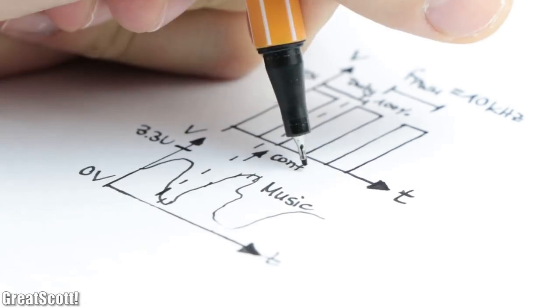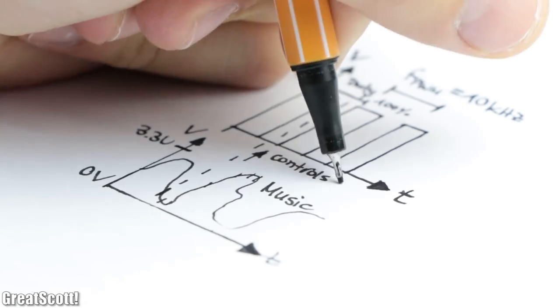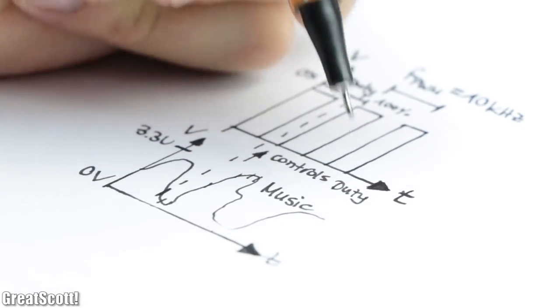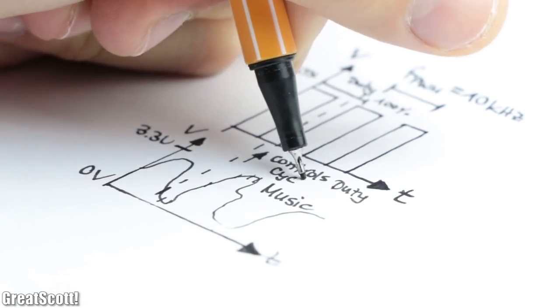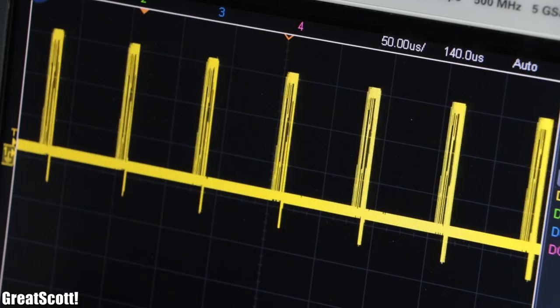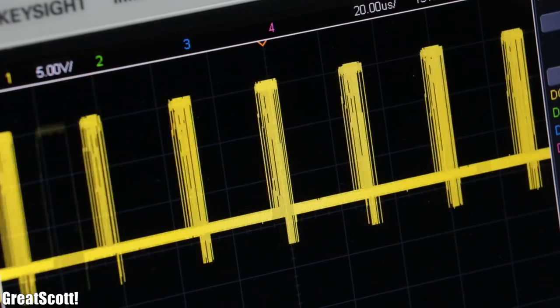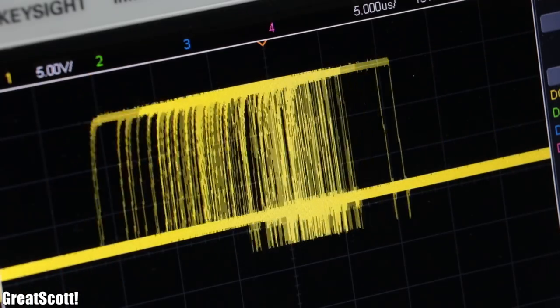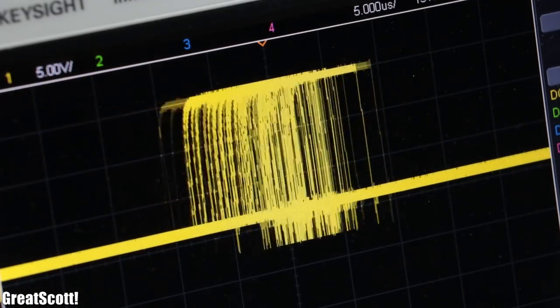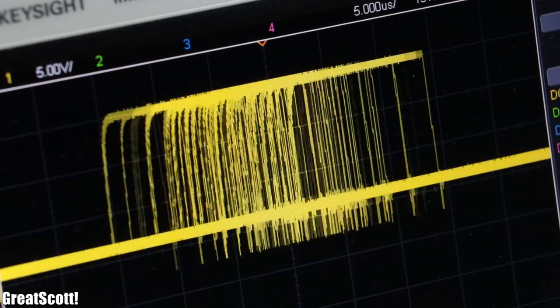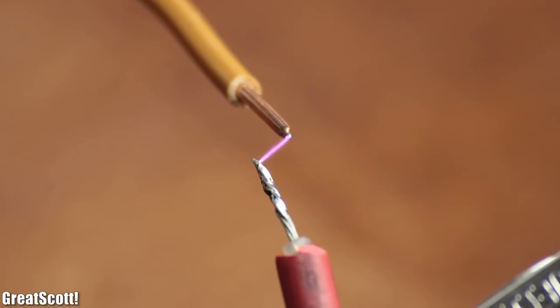Next we need to increase/decrease the duty cycle of this PWM signal according to the frequency of the music, which looks something like this on the oscilloscope. Now this can be hard to grasp, but this modulated duty cycle contains the information for our music and thus lets the arc vibrate with its frequency which creates the sound.